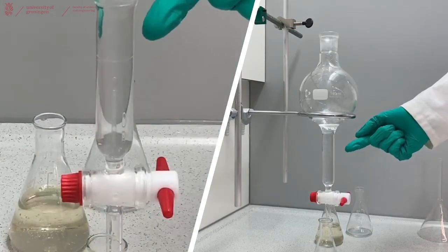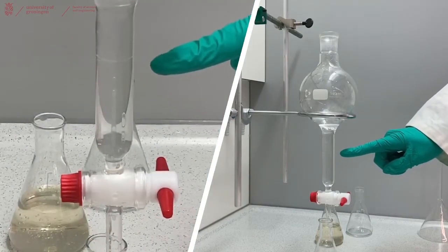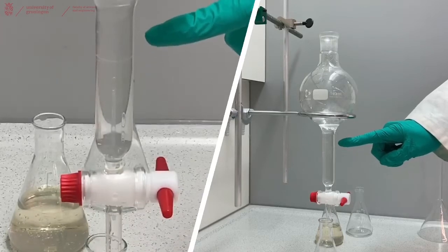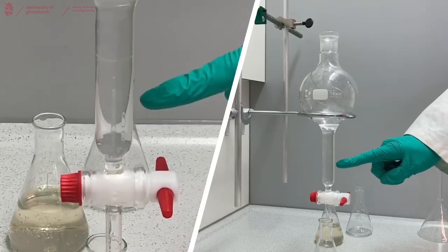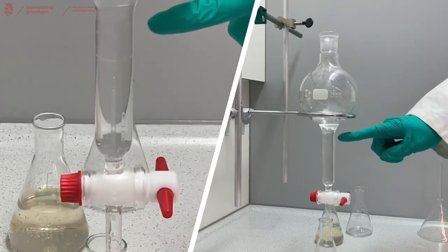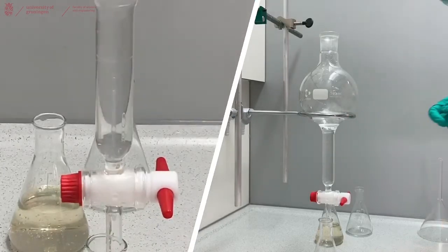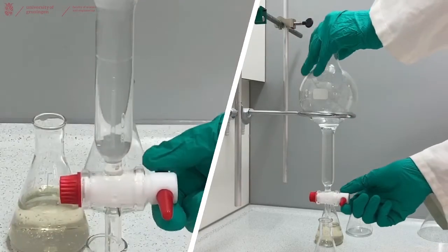The separation can be seen here. There is a thin meniscus between the two colorless liquids, water with a higher density on the bottom and pentane with a lower density on the top. Now continue removing the water until only pentane is left.